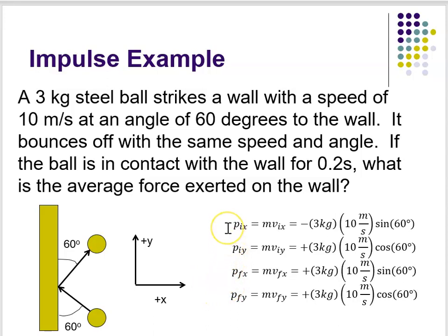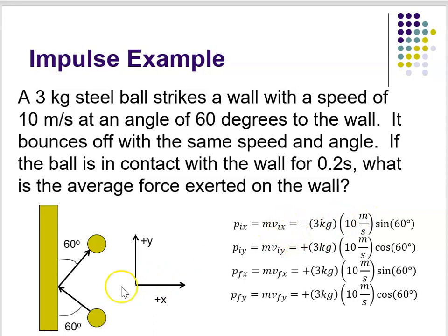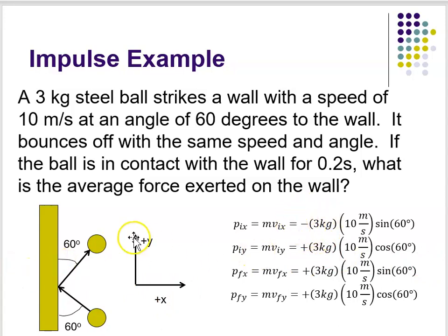Let's break down the initial momentum first. The initial x component of momentum, p initial x, equals the mass times the initial velocity in the x direction. The mass is three kilograms. The initial velocity in the x direction is pointing in the negative x direction because it's pointing up and to the left — left in this coordinate system is negative, which is why I have that minus sign out front. My velocity vector will be my speed, and I'll take the x component of that — 10 meters per second.